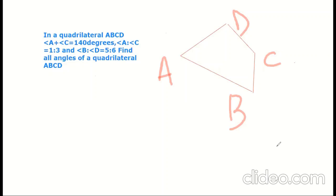We have given a quadrilateral ABCD. It is already given that angle A plus angle C is equal to 140 degrees, and angle A ratio angle C is equal to 1 is to 3.